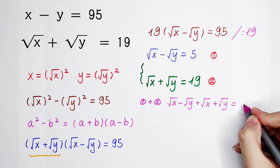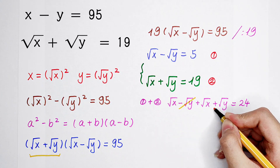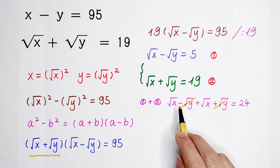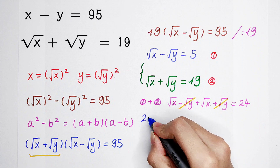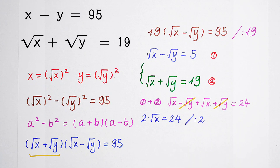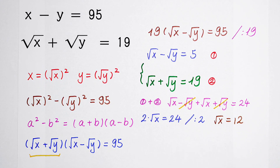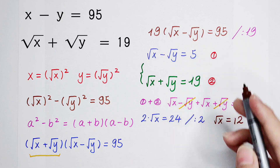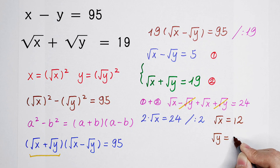5 plus 19 is 24. The negative square root of y and the positive square root of y cancel each other out. We are left with square root of x plus square root of x, which is 2 times square root of x equals 24. Dividing both sides by 2, we get square root of x equals 12. In the same way, square root of y equals square root of x minus 5, which is 12 minus 5, equals 7. So square root of y equals 7.